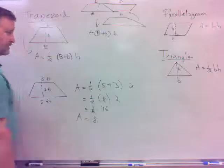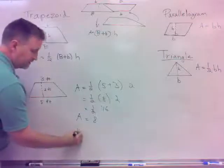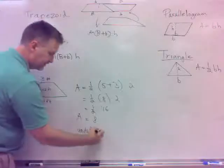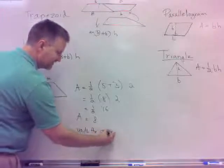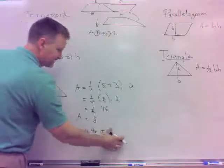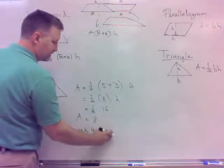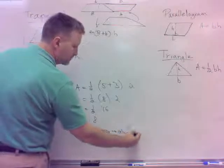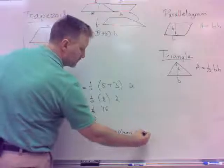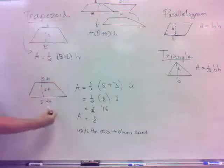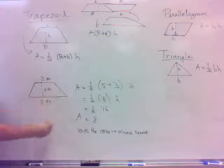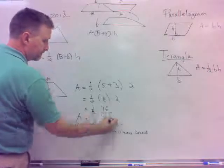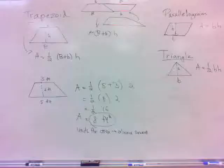Now, my area is eight. And again, units for area, I will be checking your units, because we'll do more units next time. But units for area, always square units. So what's the units here? Well, I've got feet is the distance measurement, so the area would be feet squared. Units for area is always square units.